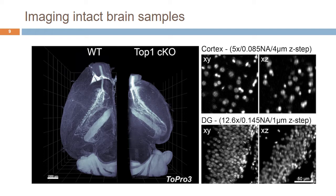We are working with a topoisomerase conditional knockout mouse model, which is involved in neuron survival. This is a wild type mouse brain with no genetic modifications, and this is a knockout where we've removed a gene. You can see images of one hemisphere from each — the brightness reflects the density of nuclei. The wild type is much bigger than the conditional knockout globally, and we can also see individual cell type differences. Zooming in, you can see individual nuclei in regions of the cortex and hippocampus, with much higher nuclei density in hippocampal regions.